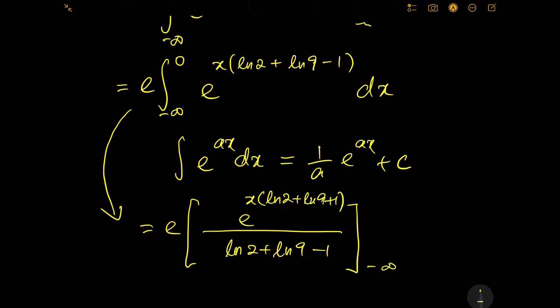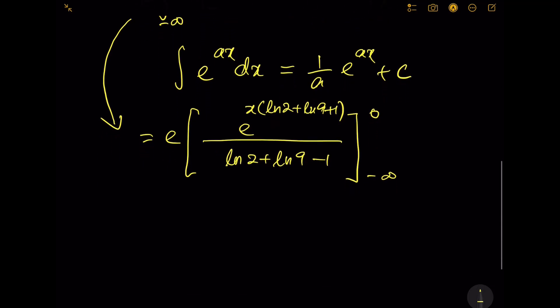Here we'd like to make one more simplification. The logarithm rule suggests that ln 2 + ln 9 can be simplified to ln(2×9), which becomes ln 18 minus 1. The same thing goes for the numerator—ln 2 plus ln 9 becomes ln 18.